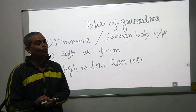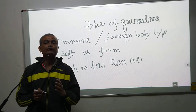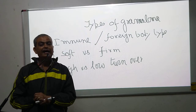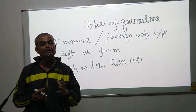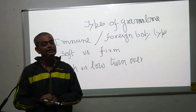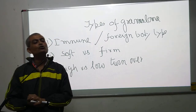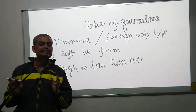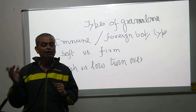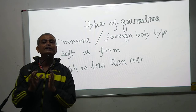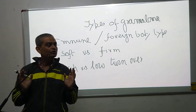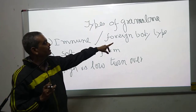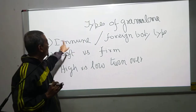Granuloma can be classified into different modes. One is immune versus foreign body. In immune granuloma, there will be usually T-lymphocytic stimulation — T-lymphocytes will activate the macrophages, resulting in modified macrophages and epithelioid cells along with intense inflammatory cell infiltration. This usually occurs in low-grade microbial infections. Whereas in a foreign body granuloma, whenever there is an inert substance, there will be not very much lymphocytic stimulation — only the macrophages convert into epithelioid cells to contain that substance, with less inflammatory cell infiltration and less tissue damage.